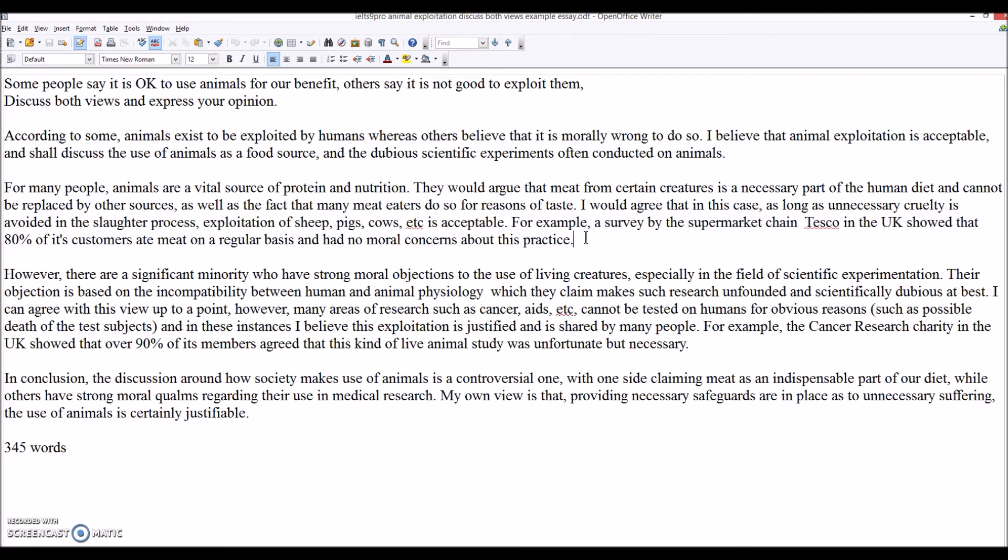So briefly introduce it. For many people, animals are a vital source of protein and nutrition. Certainly we need to explain this. They would argue that meat is a necessary part of diet and cannot be replaced by other sources. Opinion: I would agree that in this case it's acceptable. So you can see that I'm making a concession here because the discussion essay is a much more balanced essay. And then a specific example. For example, a survey by the supermarket chain showed that 80 percent. So the opposite view. Introduce it. However, some people have objections especially for experimentation. Explain this. They object because they say that humans and animals are not the same, so this research is useless. I agree up to a point. Again I'm making a concession here because it's a balanced essay. However, many areas of research such as cancer, AIDS, cannot be tested. And then a specific example. For example, cancer research shows that over 90 percent of its members agreed. Then conclusion. Restate your views. Express your own view again. And that would be that.